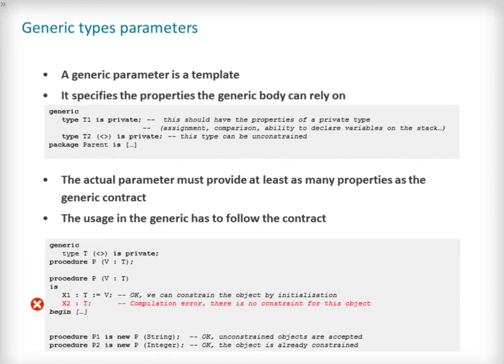In turn, the generic algorithm must also adhere to the contract. The second code snippet here shows how the compiler has picked up that there is no constraint given when the type T has been used, yet the specification of the generic contract states the type is unconstrained. The compiler and the Ada type system will ensure both the package user and the generic unit comply with the contract.